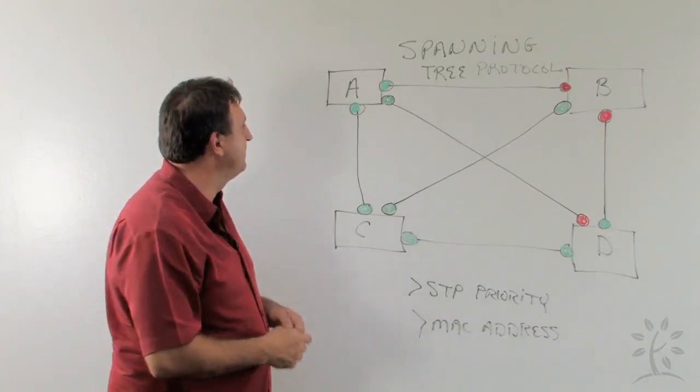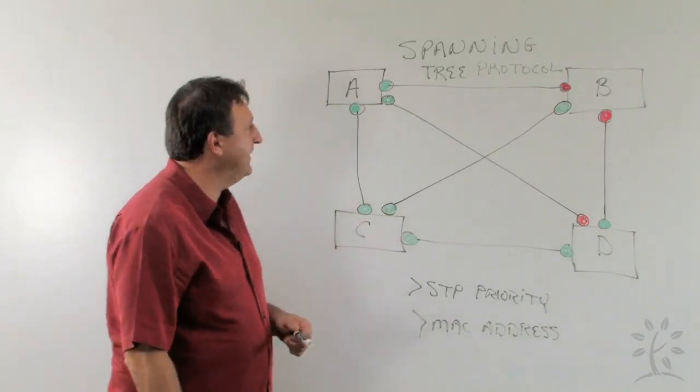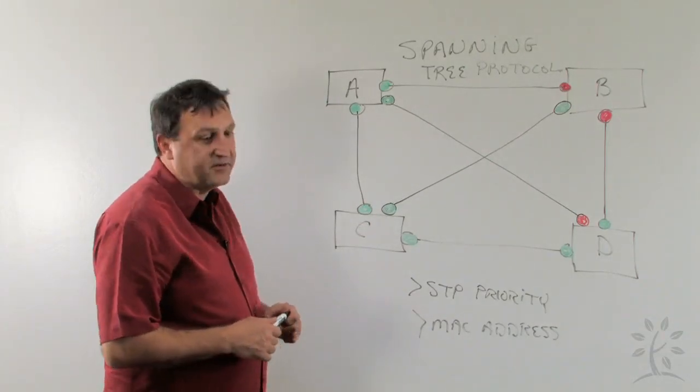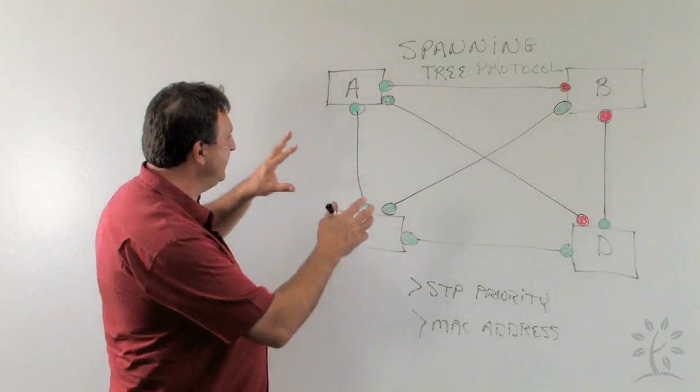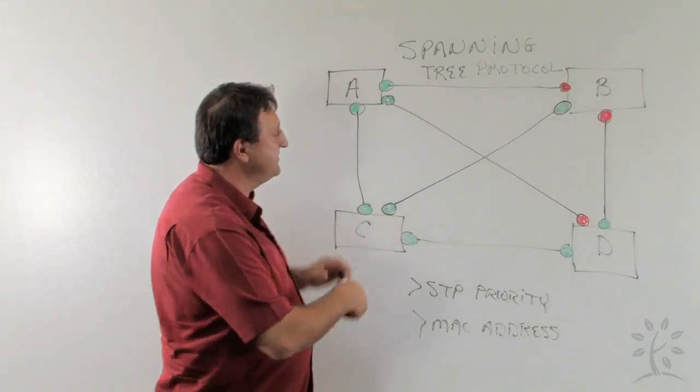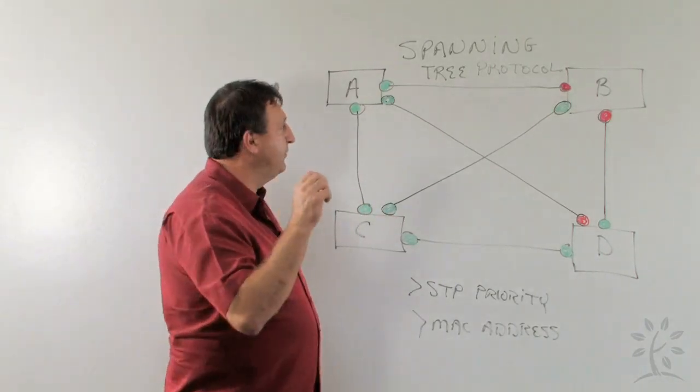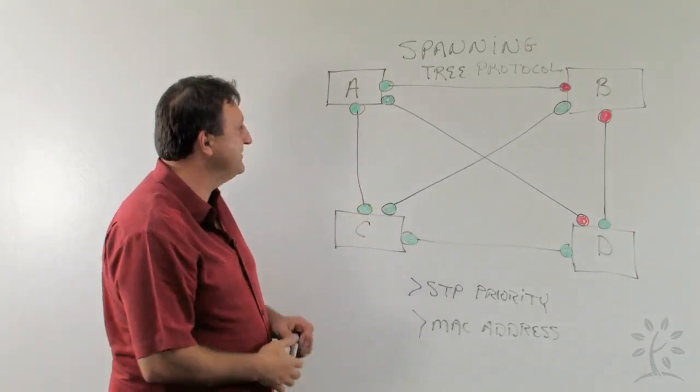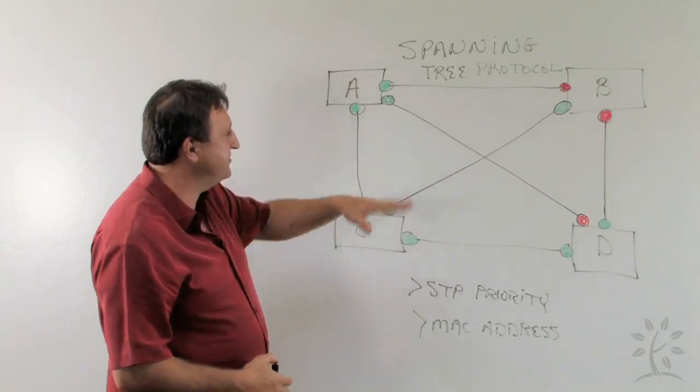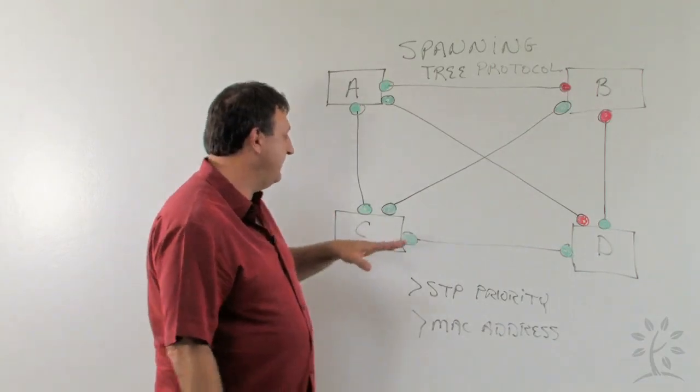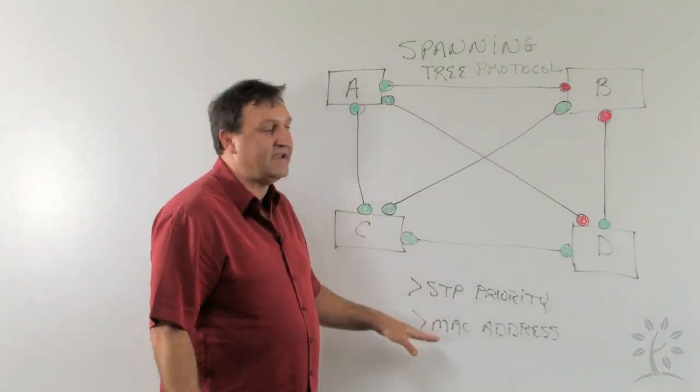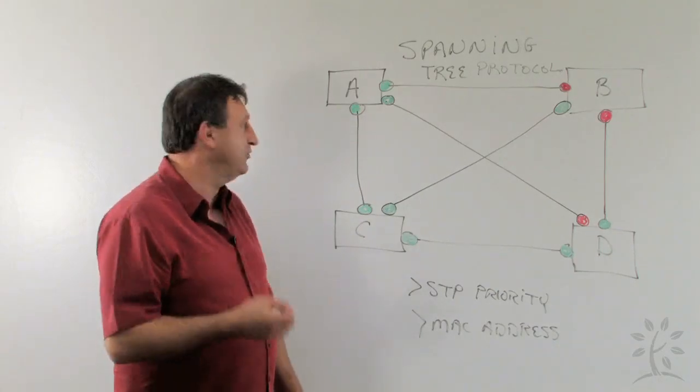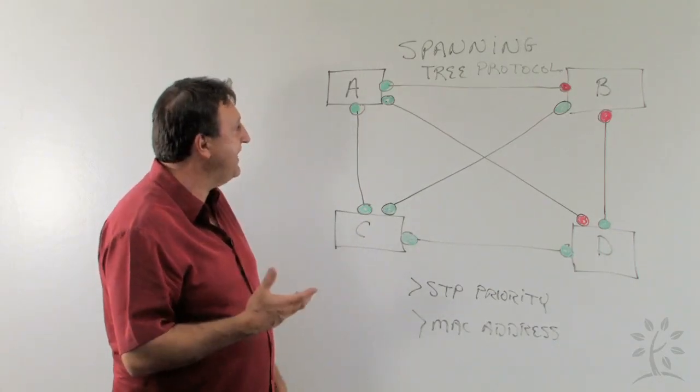So how does Spanning Tree work? Well basically what's going to happen is when we initialize these switches, we are going to have an election process that occurs. So you're going to start to see the switches and the port lights start to change colors. And as they're changing colors, basically what's happening is they're exchanging information about their Spanning Tree priority or their MAC address, which is going to be used to determine which one is the root switch.